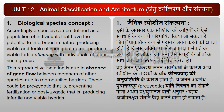इसी के अनुसार species को व्यष्टियों की ऐसी समष्टी के रूप में परिभाषित किया जा सकता है, जिनमें प्राकृतिक रूप से परस्पर जनन करने की क्षमता होती है, जिससे जीवनक्षम और जननक्षम संतति का जन्म होता है, लेकिन जो अन्य ऐसे समूहों के जीवों के साथ ऐसा नहीं कर सकती। यह जनन अवरोध प्रीजाइगोटिक यानी निषेचन को रोकने वाला, अथवा पश्च-युग्मनजी यानी अनुर्वर, बंध्य अथवा जीवनक्षम संतति पैदा करने वाला हो सकता है।